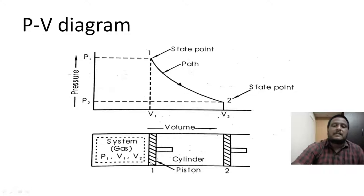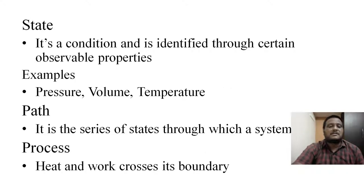For the piston to change from position one to position two, the IC engine can give work output. Work crosses the boundary. Hence, process is defined as when a system undergoes a number of processes, then heat and work cross its boundary. It is called a process. In such cases, various properties of the system will change.